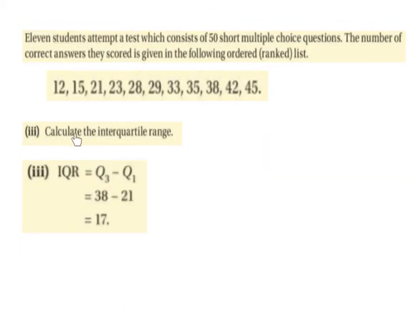Part 3, calculate the interquartile range. The IQR, the interquartile range, is Q3 minus Q1. Q3 was 38, Q1 was 21, and subtracting, we're left with 17. So the interquartile range is 17.